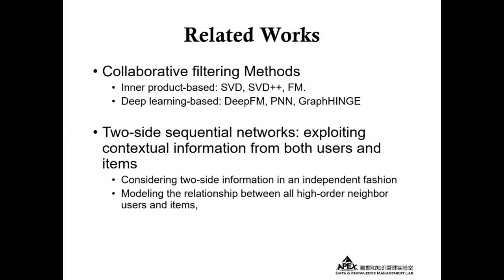Our model is extended with SVD++, a collaborative filtering method. Some classical methods are based on the inner product of latent vectors, such as SVD, SVD++, and FM. However, the linear nature makes them insufficient to discover complex correlations between users and items. Other methods based on deep learning to enhance interaction features have emerged, such as deep FM, PNN, and graph-based methods. Our structure is also related to two-sided sequential networks. Past approaches explore information from both users and items, but they either consider each side independently or model high-order neighbor relationships, which is insufficient in filtering noise and exploiting long sequential data.